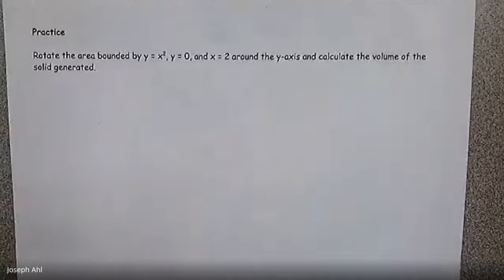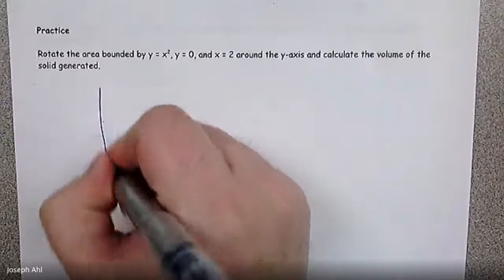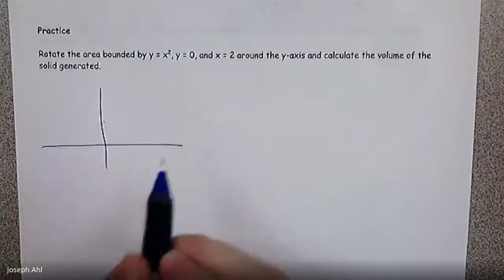So if you look at the first question here, it says rotate the area bounded by y equals x squared, y equals zero and x equals two around the y axis and calculate the volume of the solid generated. So we're going to approach this from a few different techniques. Let's draw the picture first, and we'll see maybe in the end which technique we like best.